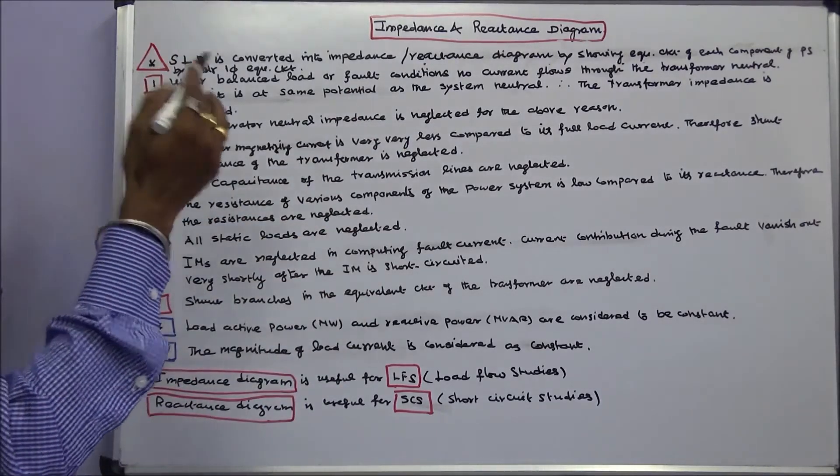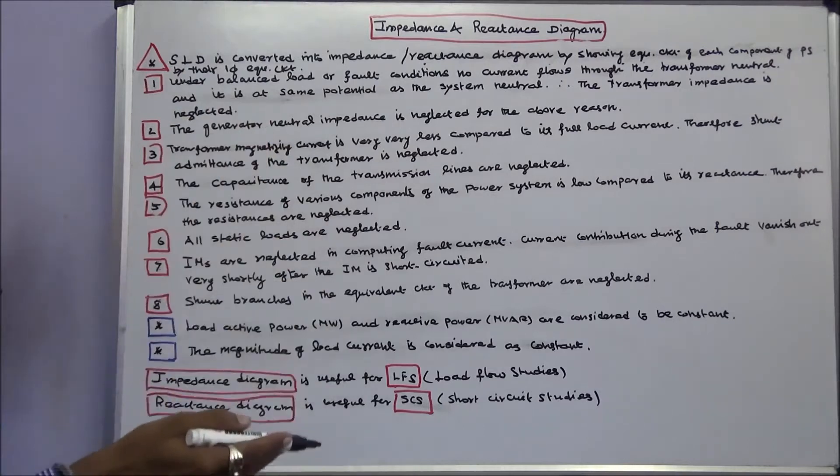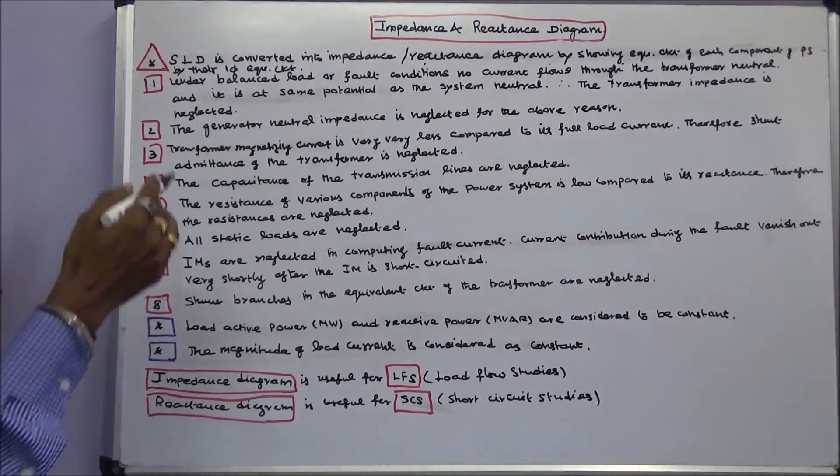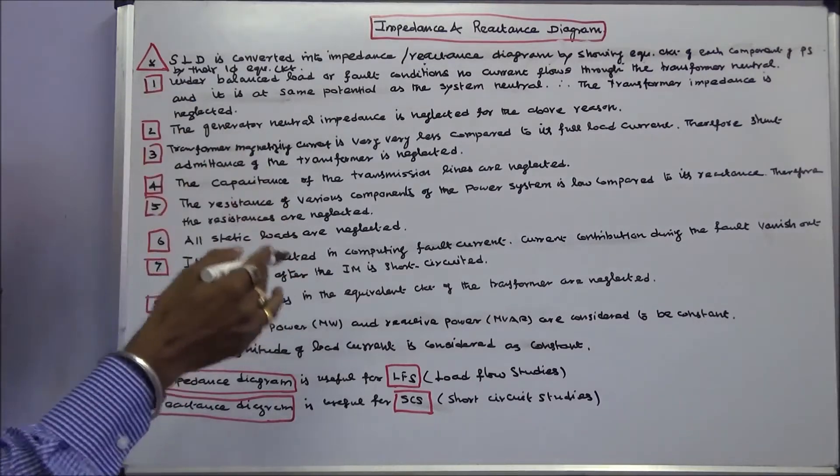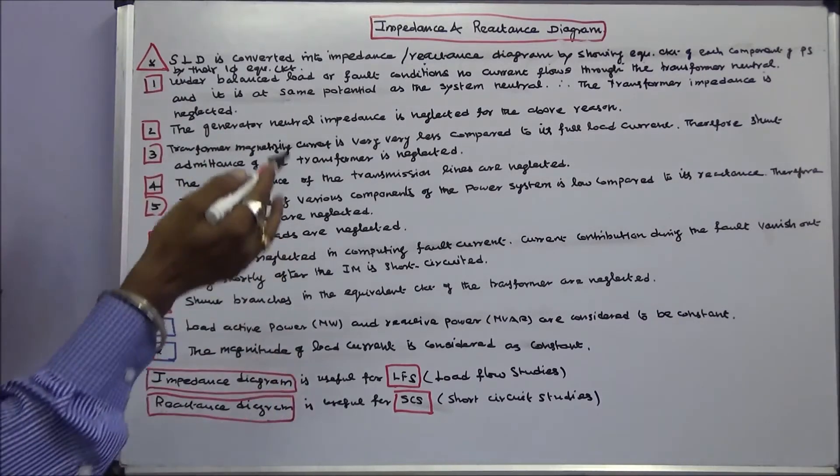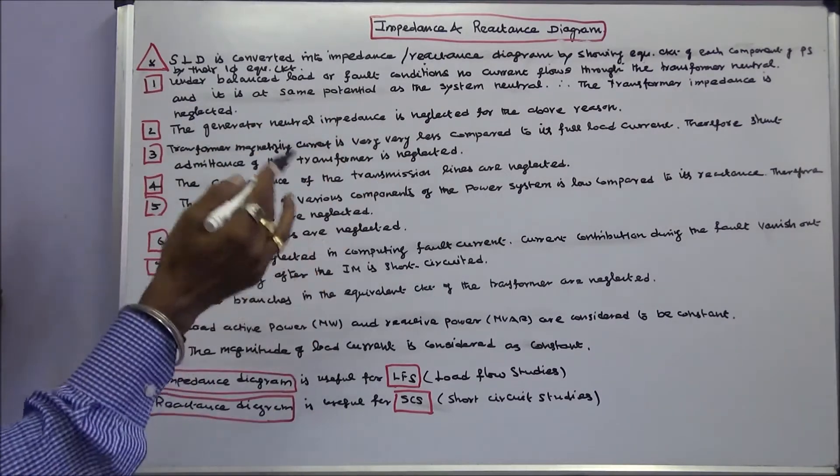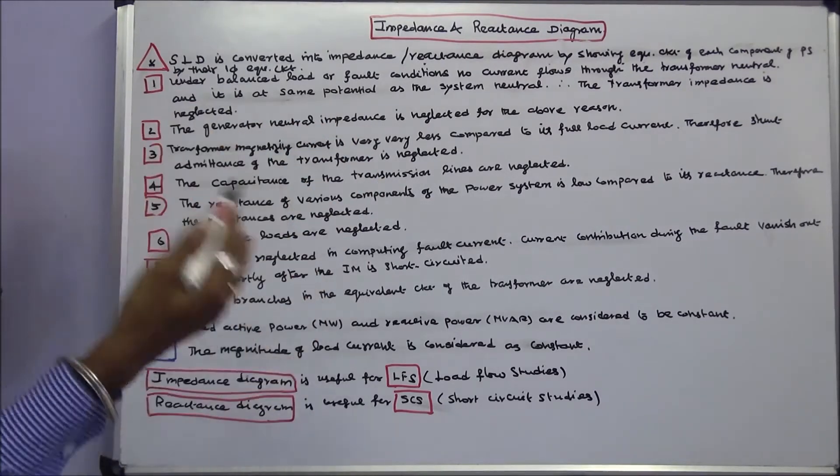Second, the generator neutral impedance is neglected for the above reason. Third, transformer magnetizing current is very very less compared to its full load current. Therefore, shunt admittance of the transformer is neglected.